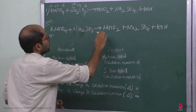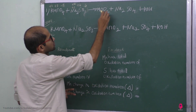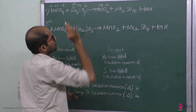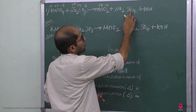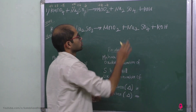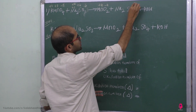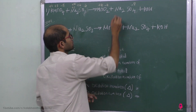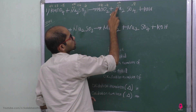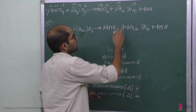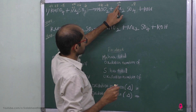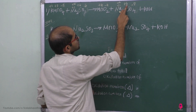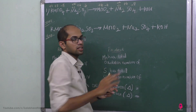For MnO2: oxygen is minus 2 and there are 2 oxygens, so 2 into minus 2 equals minus 4. So manganese is plus 4 — that is neutral. For Na2SO4: all oxygen atoms — 4 oxygens, so 4 into minus 2 equals minus 8. Sodium is plus 1; 2 sodium atoms give plus 2. So sulfur is plus 6. Plus 6 plus 2 minus 8 equals zero, neutral.